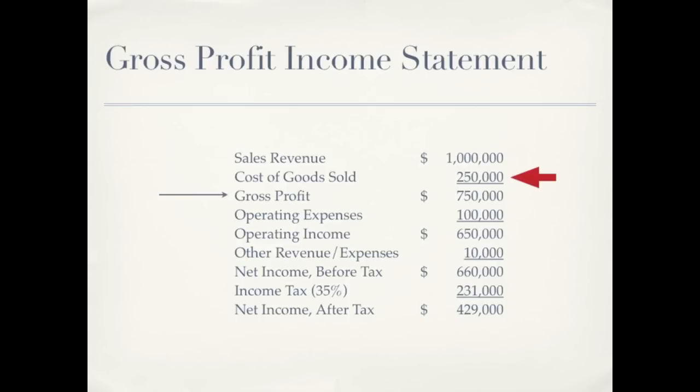From our gross profit we're going to subtract our operating expenses. Remember, the operating expenses are those period costs we talked about — the selling and administrative costs. Once we subtract out our operating expenses from gross profit we're left with our operating income.